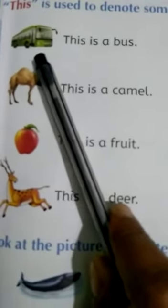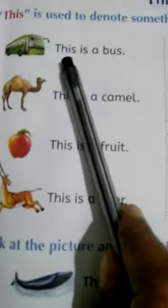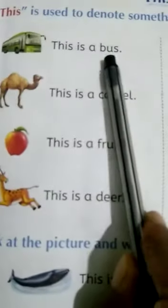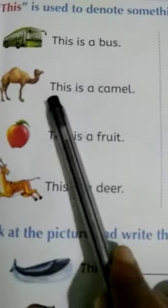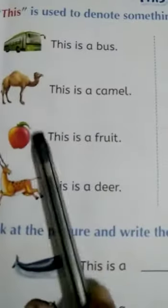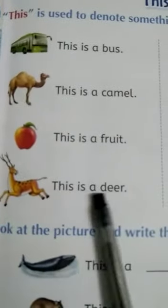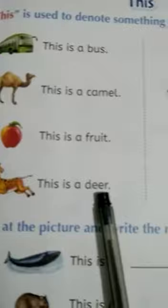Understood? Look at your — what is this? This is a bus. This is a camel. This is a fruit. This is a deer.